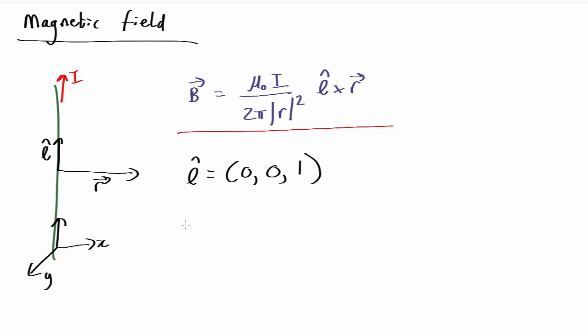So we have to work out the cross product. Now we know if we have A cross B, the definition of a cross product is Ay Bz...